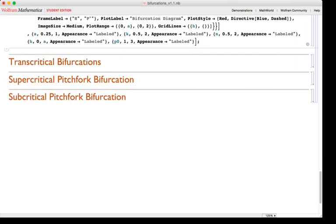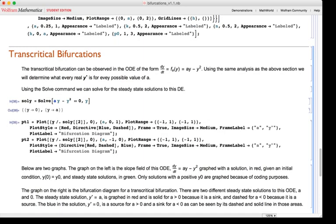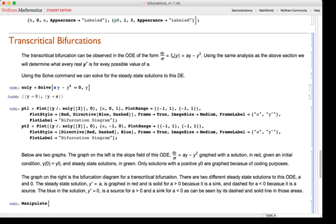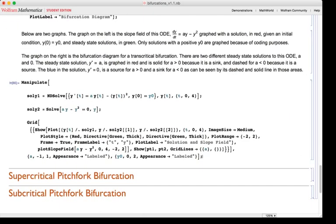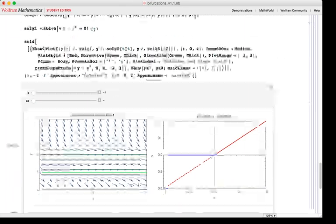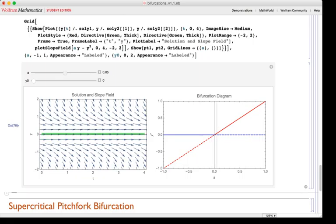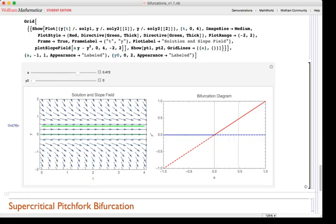The other three sections of the notebook are on transcritical, supercritical pitchfork, and subcritical pitchfork bifurcations. This is simply a y minus y squared. This output looks like this. As I modify the parameter a, steady-state solutions change. Notice the grid line, this tan gray line, on the bifurcation diagram on the right.